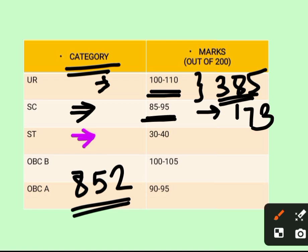The expected cutoff for ST category will be around 30 to 40 marks. For ST category, there are 121 number of seats.